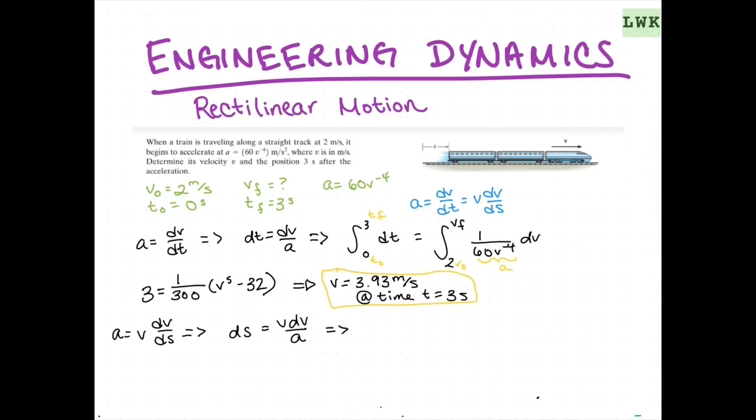So, we can start plugging in what we know for a. And that's going to give us ds equals 1 over 60 (v to the 5th) dv. So, now let's just take the integral from 0 to our sf. So, this is just our initial position to our final position of ds equals 1 over 60, 2 to the 3.93, which is our new v. Almost forgot. So, we have v0, vf. And we just found that vf right above.